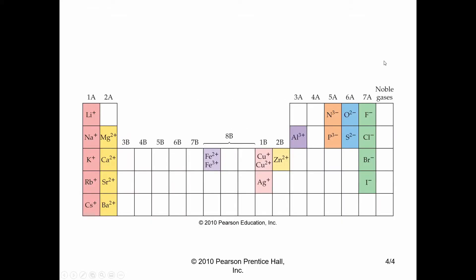If we look at a periodic table, the noble gases are in group 8. They have the perfect amount of electrons so that they don't need to gain or lose any electrons to be in a stable state. Group 7 has 7 valence electrons, group 6 has 6, group 5 has 5, group 1 has 1, and group 2 has 2 valence electrons.